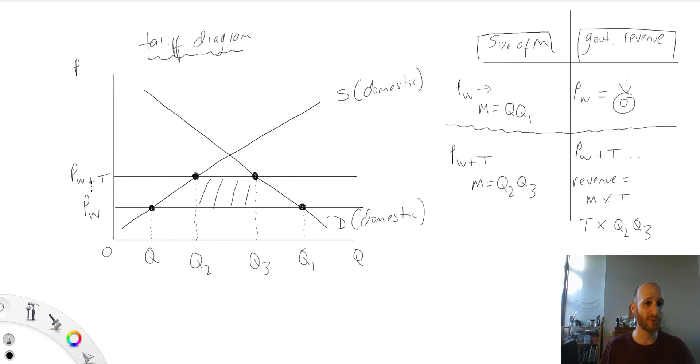So just to recap, if I'm starting at price world, at price world, I know that I'm all the way down here. So at price world, I've got lots of imports because the price is nice and low. So at price world, the level of imports is equal to Q to Q1. And at price world, I also know that there is no government revenue, as there is no tariff.